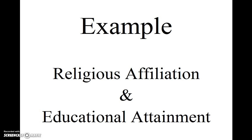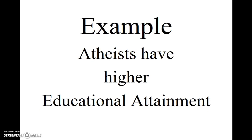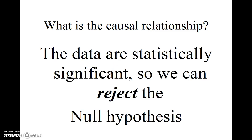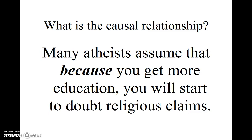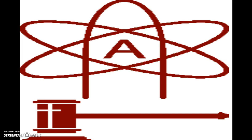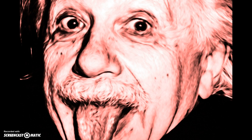One example would be the correlation between religious affiliation and educational attainment. The correlation is negative. As many atheists have pointed out, atheists tend to have a higher level of educational attainment. What is the causal relationship? I don't think it's the null hypothesis, because the data are based upon a large sample size and are statistically significant, so we can reject the null hypothesis. Many atheists then assume that because you get more education, you will start to doubt religious claims. Atheists tout their great reliance upon common sense and reasoning, and claim that once we have more information and the reason of good judgment, we too will reject religious claims and become great atheist geniuses.